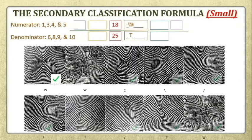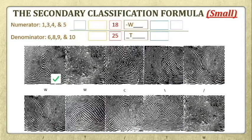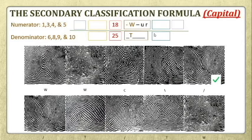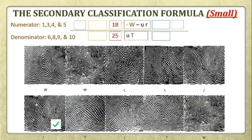The numerator consists of fingers 1, 3, 4, and 5, and the denominator consists of fingers 6, 8, 9, and 10. Finger number 1 is a plain whorl, so it will be represented by a dash. Finger number 3 is also a plain whorl type pattern, so it will be represented by a dash. Finger number 4 is an ulnar loop, so it will be represented by small letter U. Finger number 5 is also an ulnar loop, so it will be represented by small letter U.